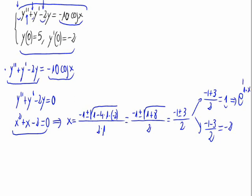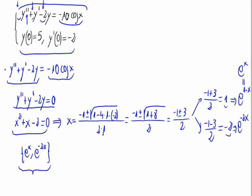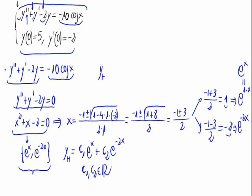The first solution is e raised to 1 times x. As they are real numbers, if they were complex we would obtain trigonometric solutions. The second is e raised to minus 2 times x. So e^x and e^(-2x) are the basis of solutions, and the homogeneous solution is y_h = c₁·e^x + c₂·e^(-2x), where c₁ and c₂ are real numbers.